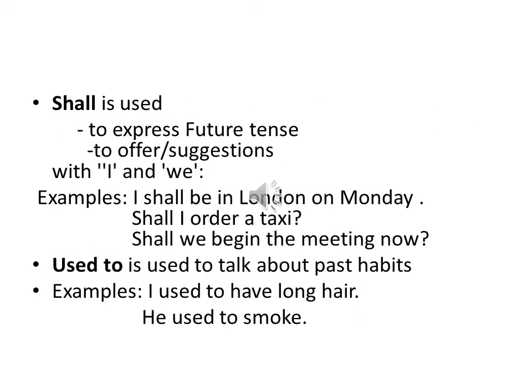Shall is used to express future tense, to make an offer, or for suggestions, with the first person pronouns, that is I and we. For example, I shall be in London on Monday. Shall I order a taxi? Used to is used to talk about past habits. For example, I used to have long hair, or he used to smoke.